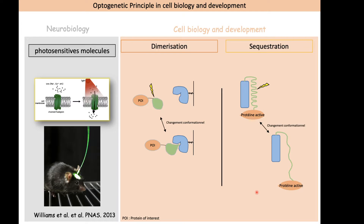In the context of cell biology and cell development, there are two main strategies that have been used, and I will present some examples later: dimerization and the sequestration of active proteins.